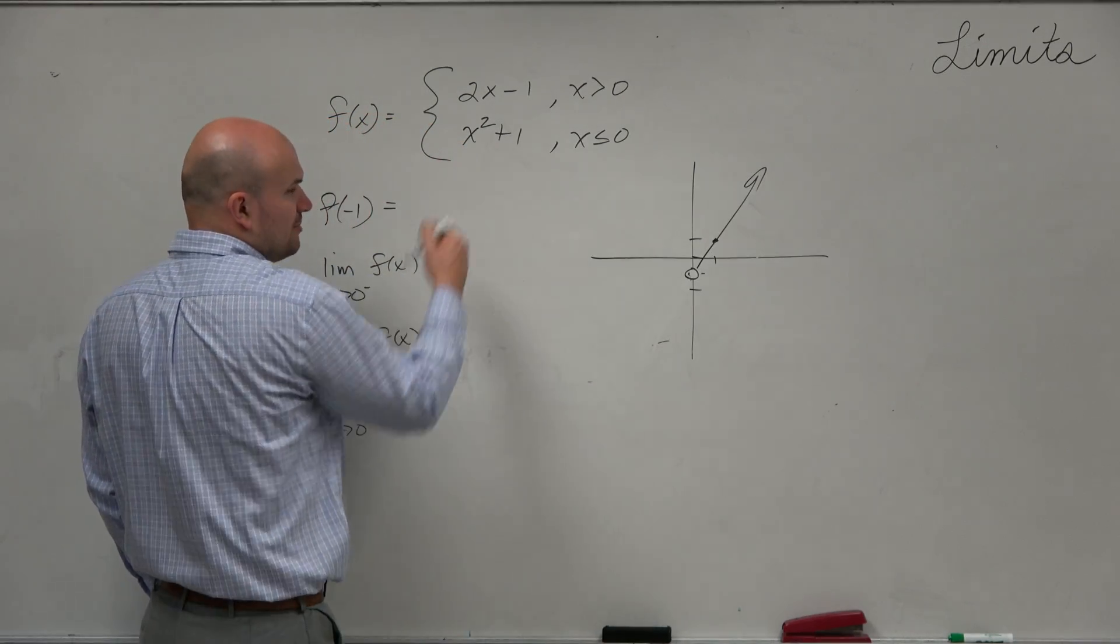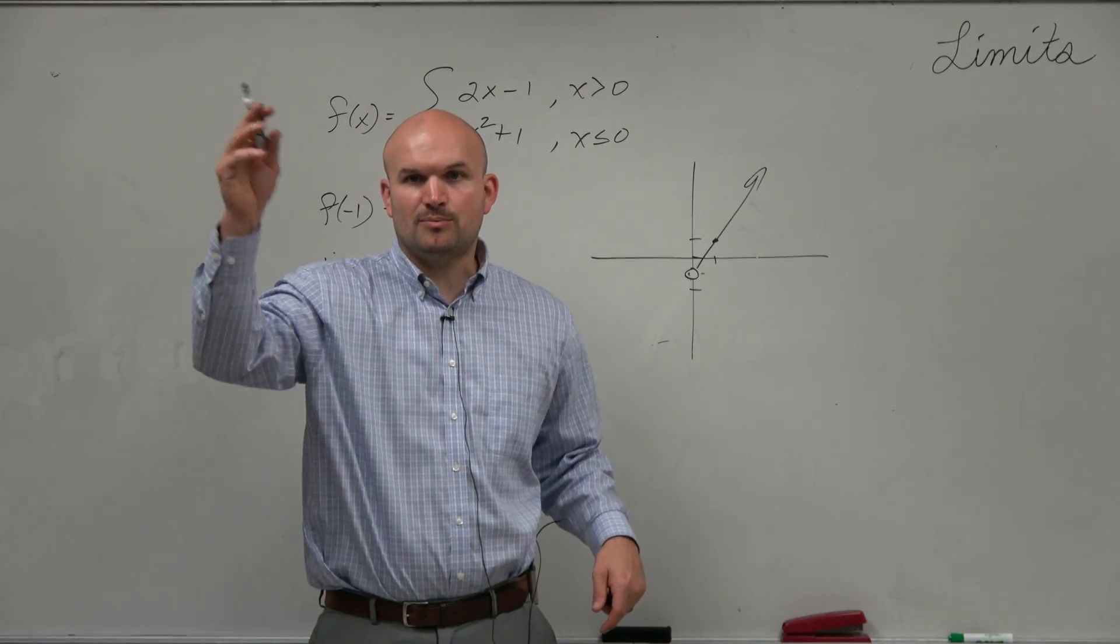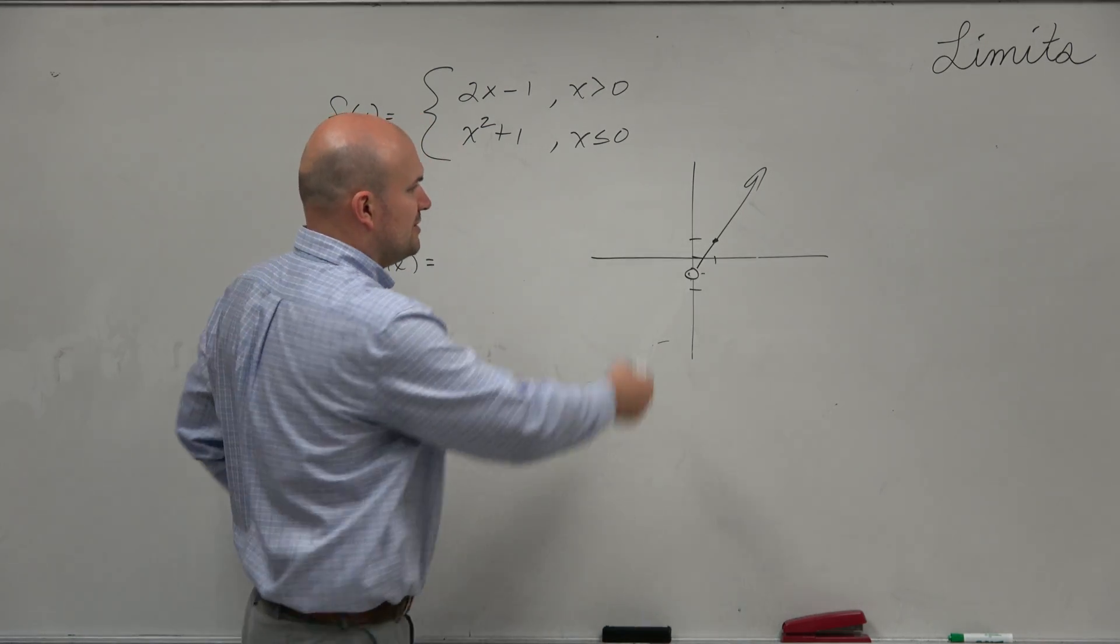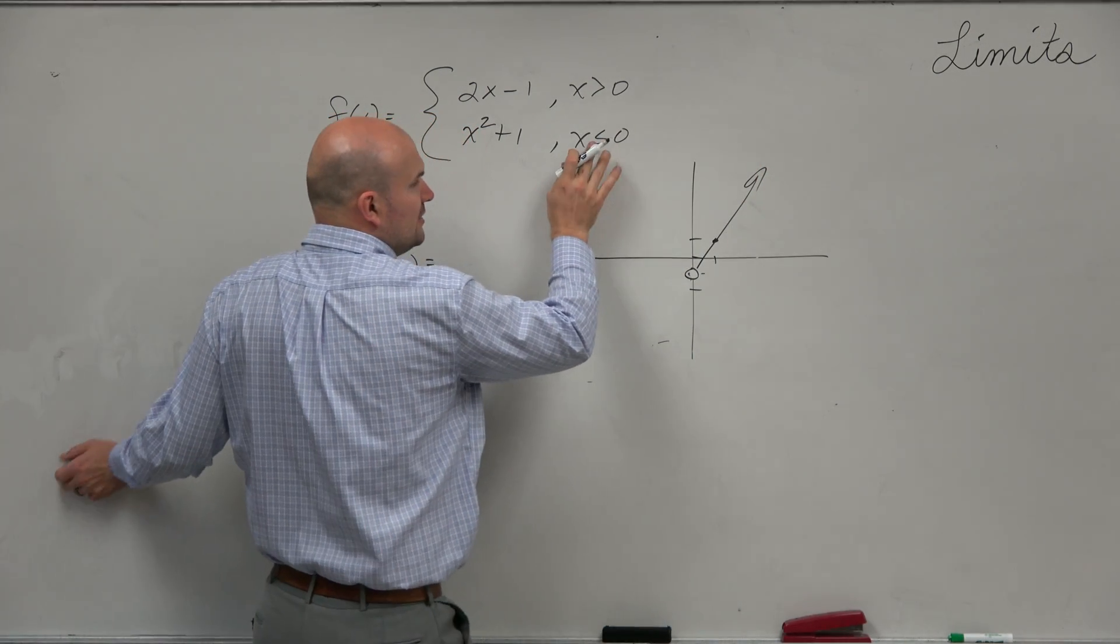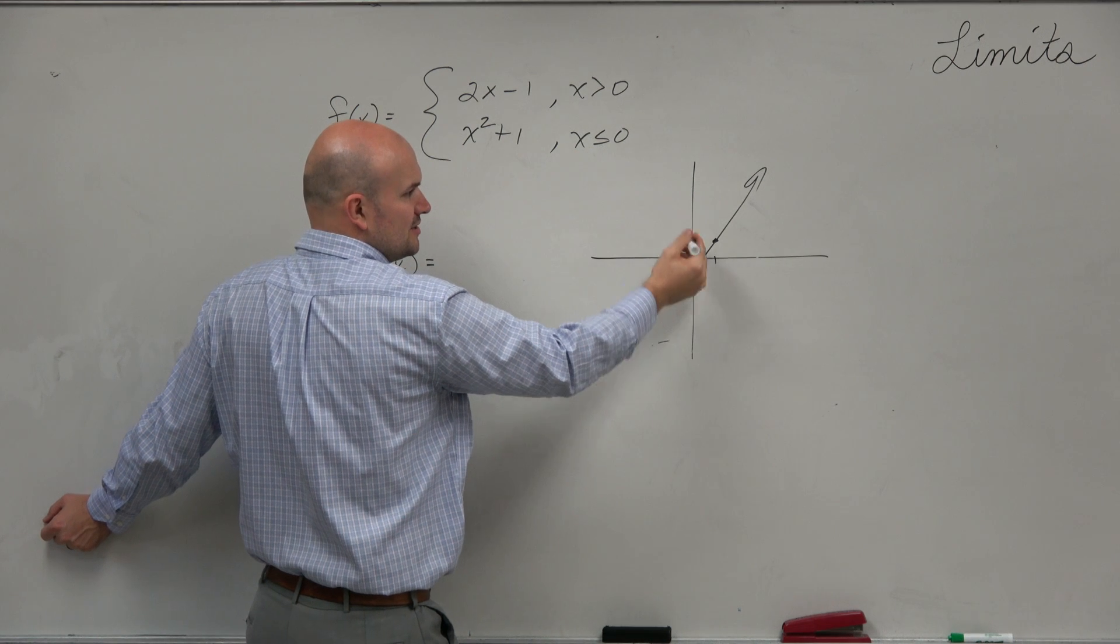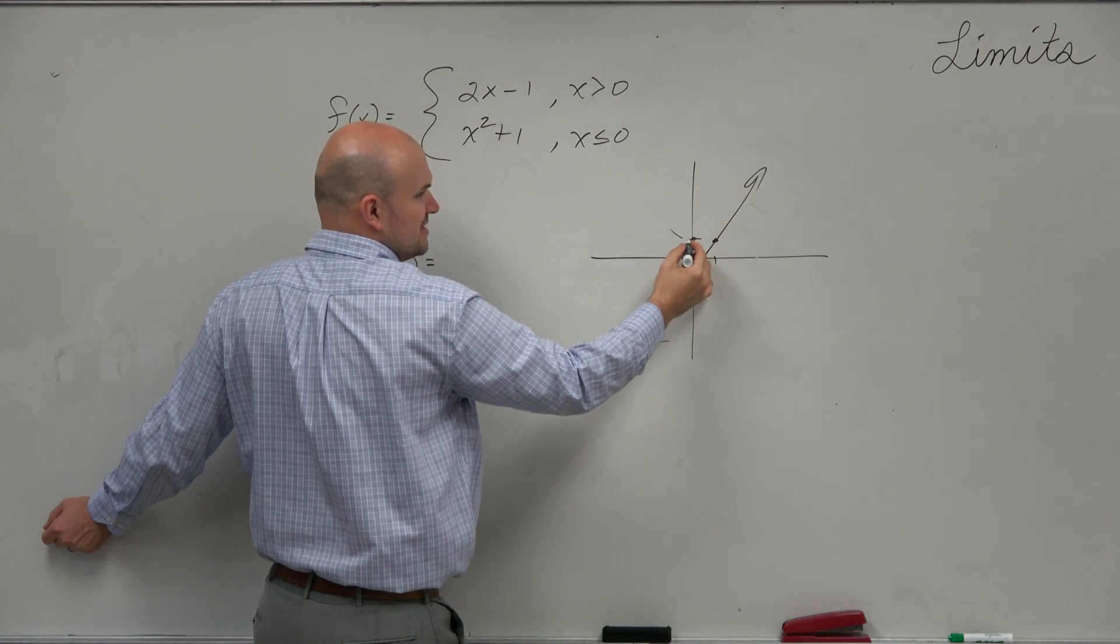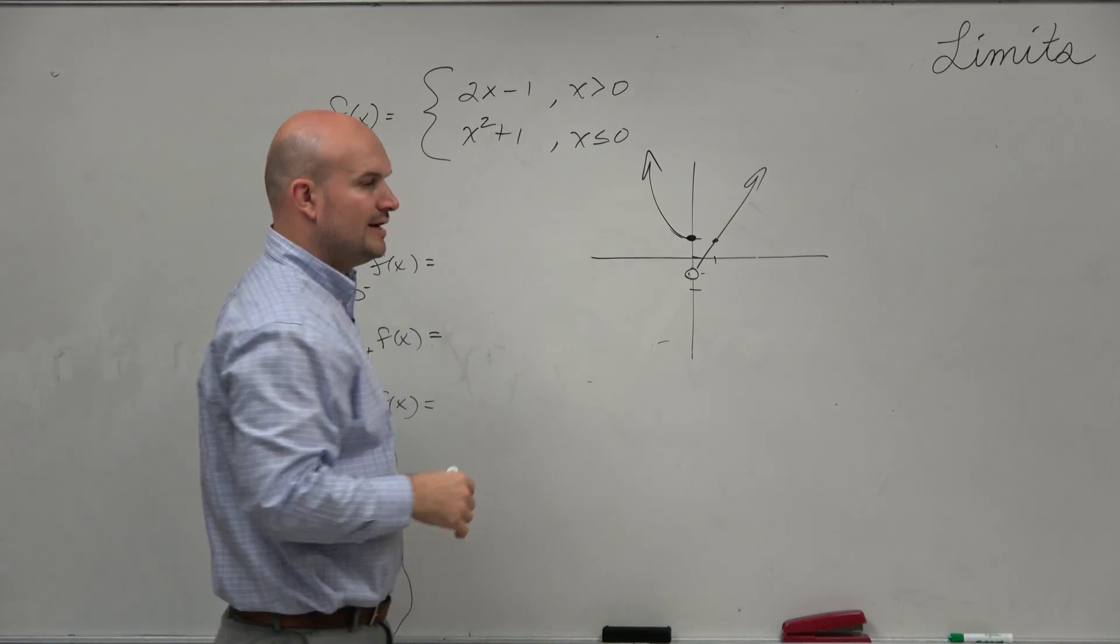The next one I look at is x² + 1. You say, oh, x squared, that's that nice little parabola. Plus 1 just means it's being shifted up 1, right? Well, rather than doing a perfect parabola, I only need to graph this for when x is less than 0. So if I was going to do a nice parabola here, I don't need to graph anything that's positive. I just need to do the negative version.